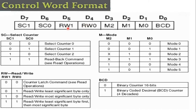Bits D6 and D7 select the counter: 00 = counter 0; 01 = counter 1; 10 = counter 2; 11 = read back command. This completes the control word format of 8254.